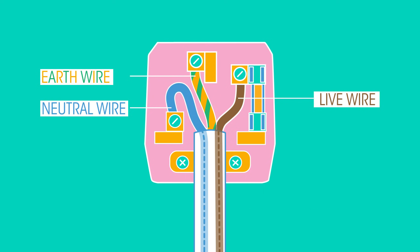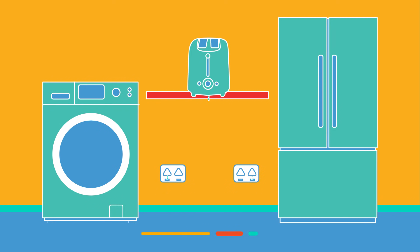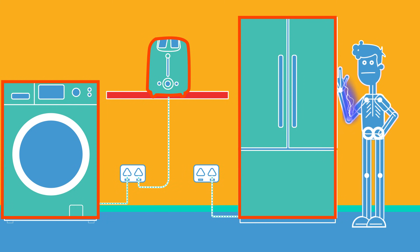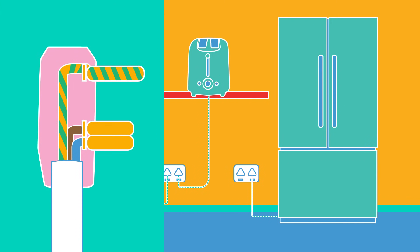The green and yellow earth wire is a safety wire. Many electrical appliances have metal casings. If a loose wire touches the metal casing, anyone who touches the appliance will get an electric shock, which is where the earth wire comes in.